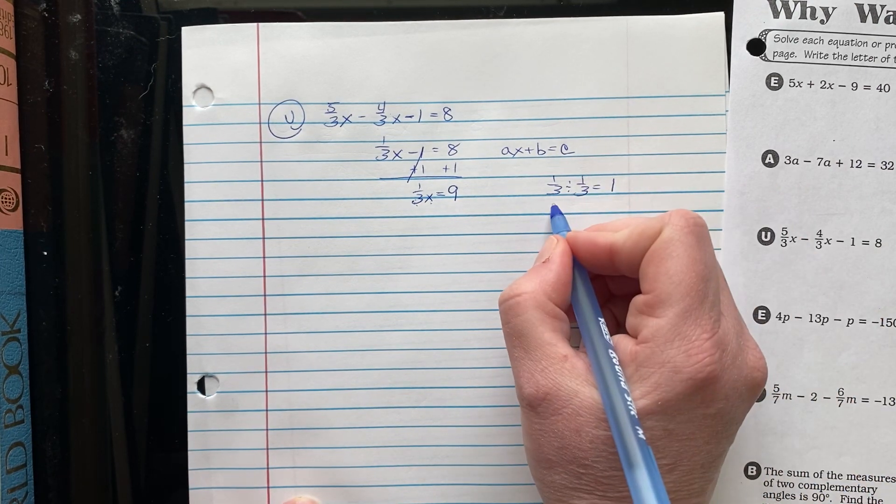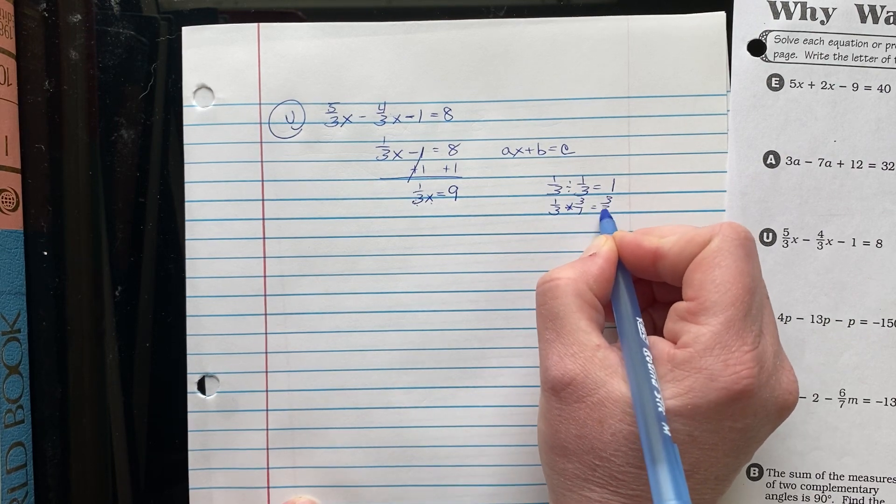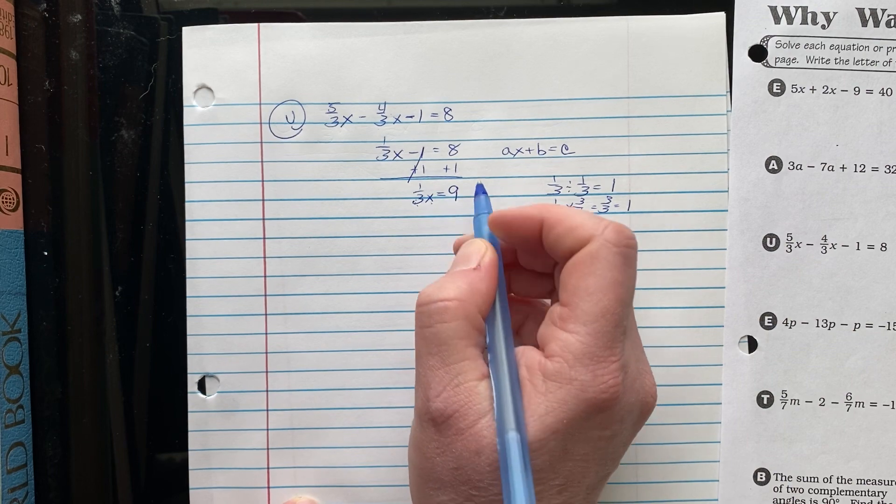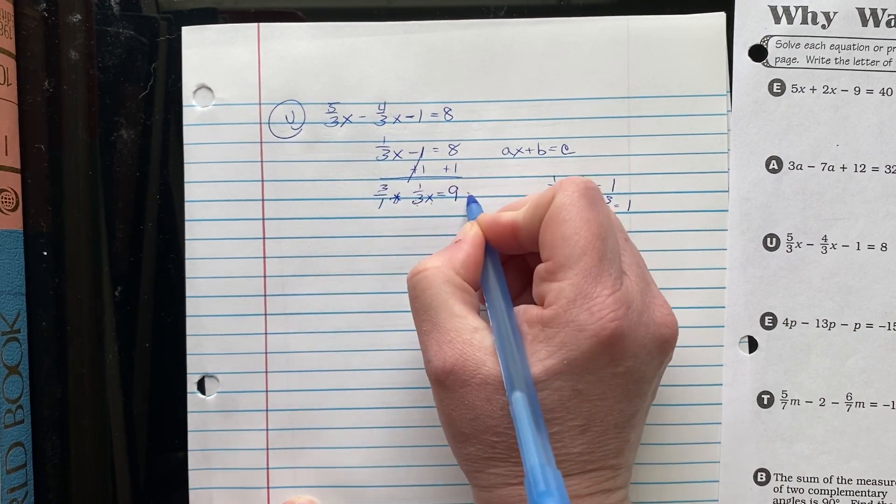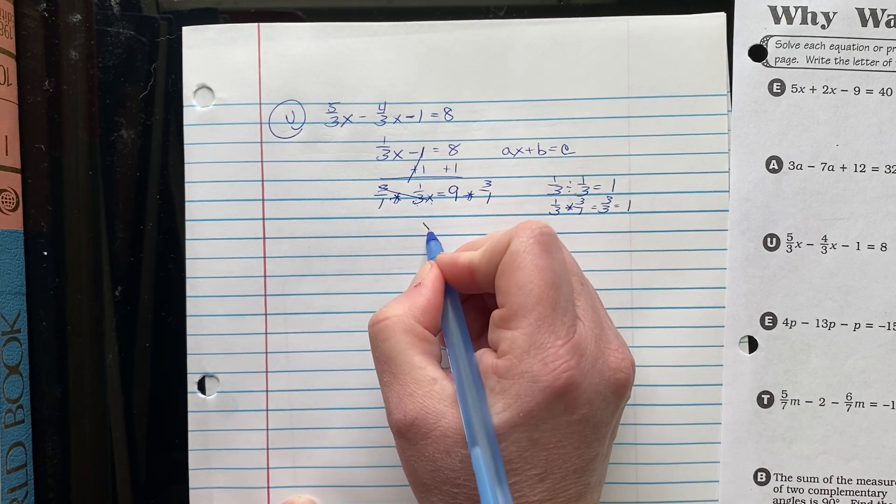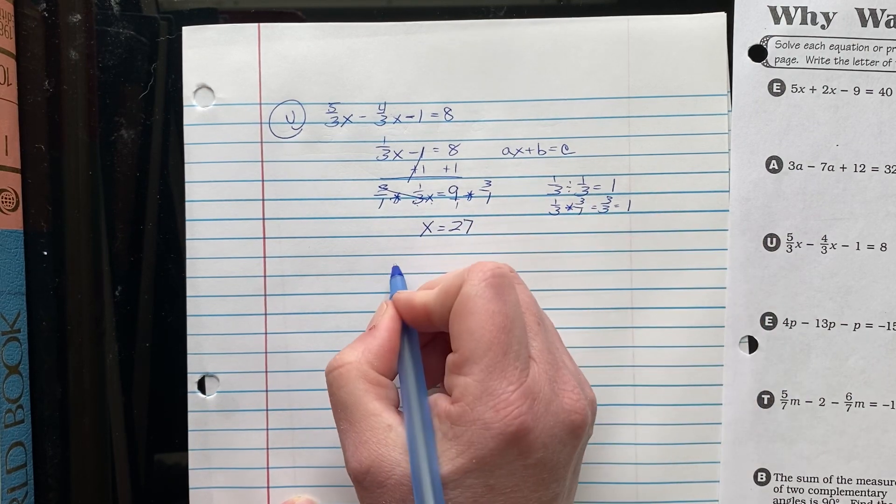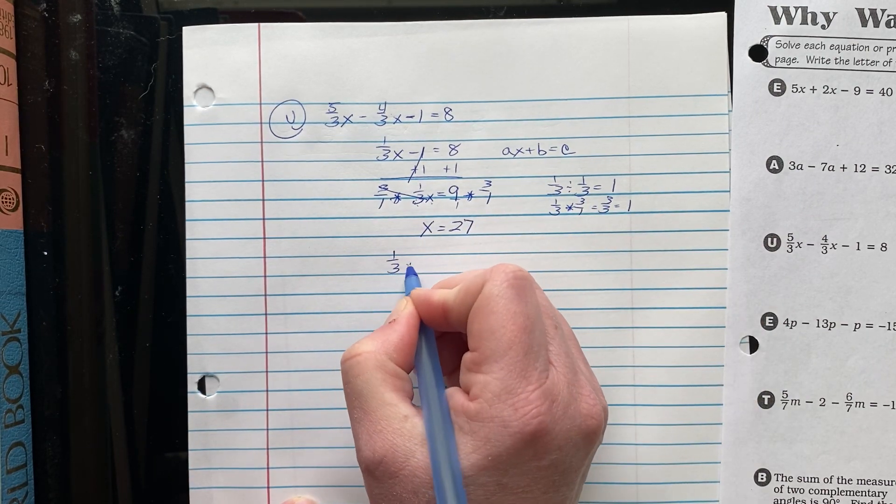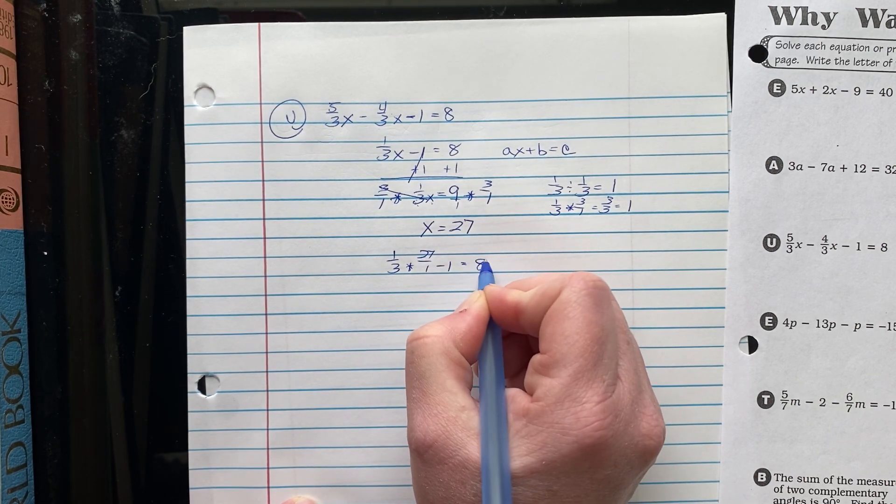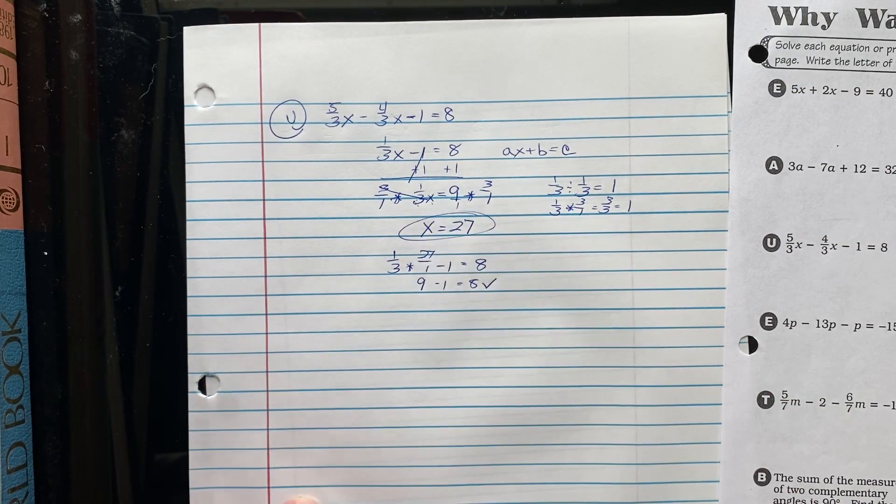We do remember though, the reason that works is one third multiplying by the reciprocal. Three thirds is one. That's going to help us over here on this side. So we're going to multiply by three wholes and multiply by three wholes. Gives us that beautiful coefficient of 1x. Nine wholes times three wholes is 27. I can check it if I want to. One third times 27 wholes minus one should equal eight. This is going to be nine. Nine minus one is eight. It checks out. That is my answer.